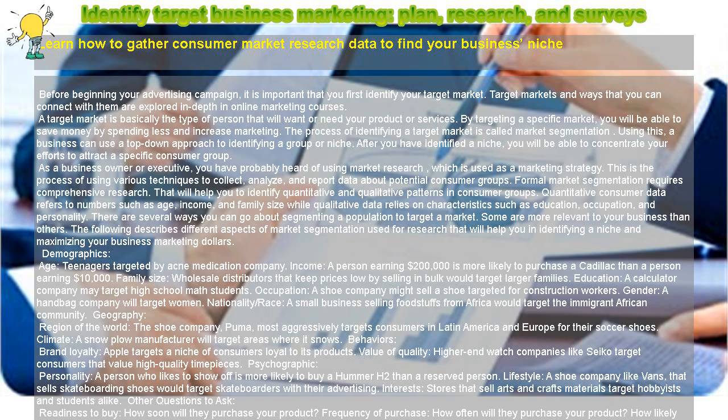Lifestyle — a shoe company like Vans that sells skateboarding shoes would target skateboarders with their advertising. Interests — stores that sell arts and crafts materials target hobbyists and students alike. Other questions to consider: readiness to buy — how soon will they purchase your product? Frequency of purchase — how often will they purchase your product? How likely are they to purchase your type of product?